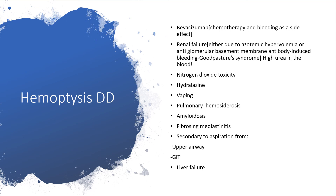In renal failure, one might ask how hemoptysis could be related. It is either due to azotemic hypervolemia or anti-glomerular basement membrane antibody-induced bleeding throughout the body — which is Goodpasture's syndrome. These will occur in the setting of high urea levels in the blood; in renal failure there will be high urea, and the presence of urea coating the system could lead to hemoptysis.